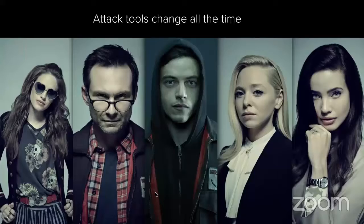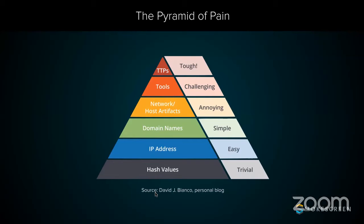Another concept worth keeping in mind is the Pyramid of Pain. The further up this pyramid you go, the more trouble you cause the attacker. There's the famous joke about two campers and a bear attack — one says we better outrun this bear, and the second says 'I don't have to outrun the bear, I just have to outrun you.' That applies to enterprise security: if you're enough of a pain to attack, it stops becoming worth the attacker's while. If there's somebody comparable with weaker security and easier to attack, you stop being worth attacking. Standard cost-benefit analysis.